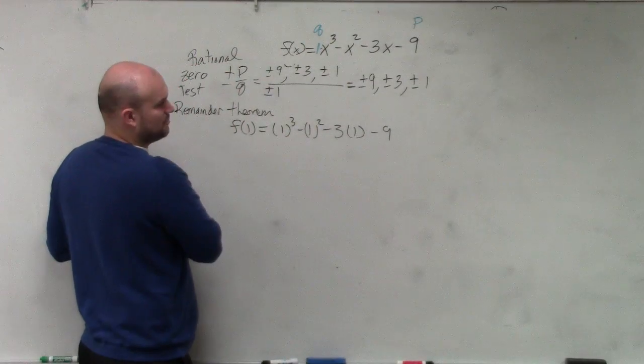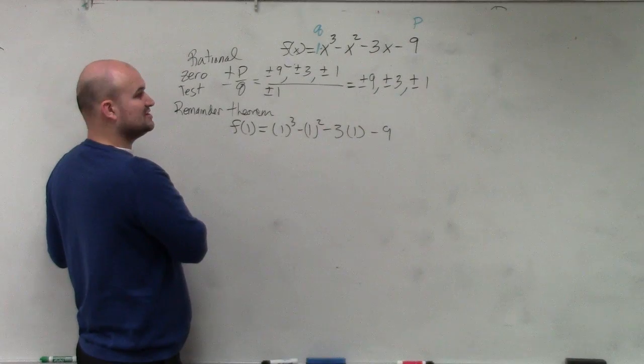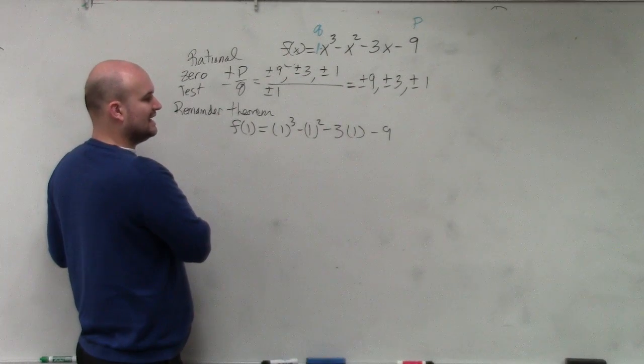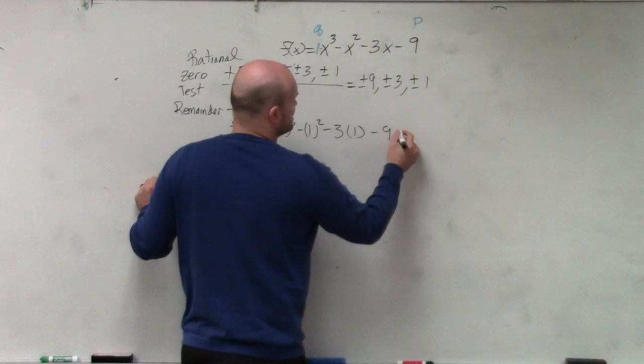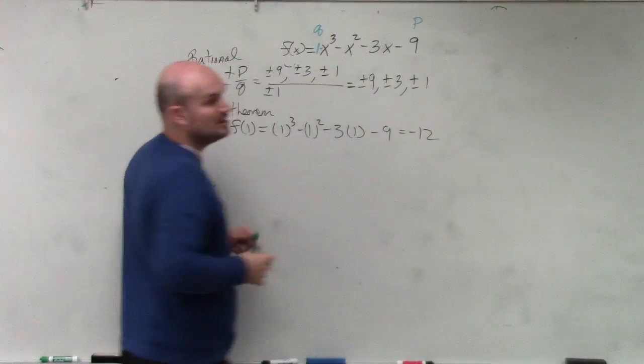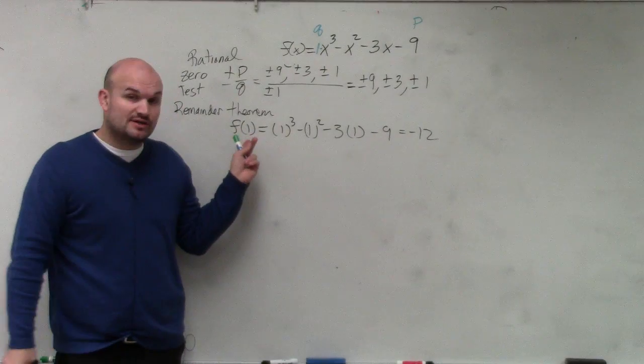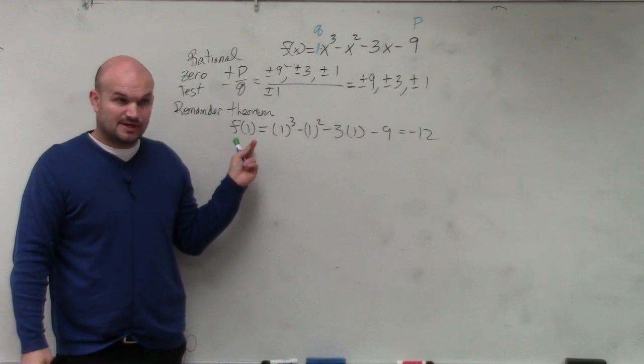Remember, whatever f(1) is, the remainder theorem tells you what the remainder would be doing synthetic division. So rather than doing synthetic division for all of these, I can simply just simplify this. 1 cubed which is 1, minus 1 squared which is 1, that's 0. Negative 3, so that's 0, that's negative 3 minus 9, that's negative 12. So that's the remainder. Is 1 a zero? No.